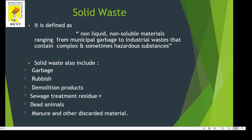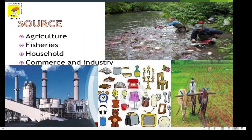Now we'll see what is a Solid Waste. Solid Waste is nothing but a non-liquid, non-soluble material ranging from municipal garbage to industrial waste that contains complex and sometimes hazardous substances. These solid wastes include garbage, rubbish, demolition products, sewage treatment residue, dead animals, manure and other discarded materials. The sources of Solid Waste include Agriculture, Fisheries, Household, Commerce and Industry.